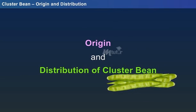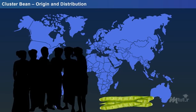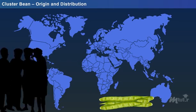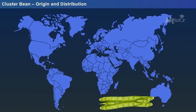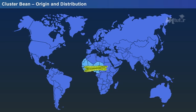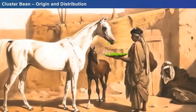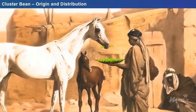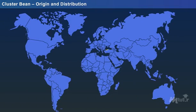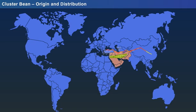The real origin of cluster bean is still under debate. However, it is believed that cluster bean originated from the dry regions of West Africa or the deserts of Middle East. At first, the Arab people domesticated Guar for feeding their horses. After the emergence of the silk trade route, trade began to flourish in the Middle East, which paved the way for traders to introduce the Guar pods to the countries they travelled.